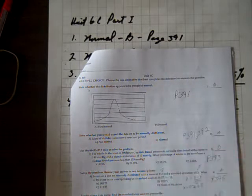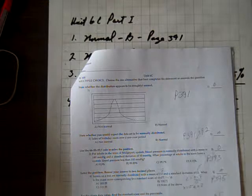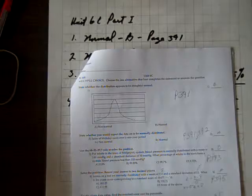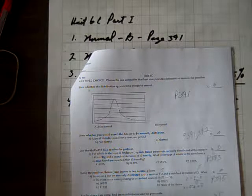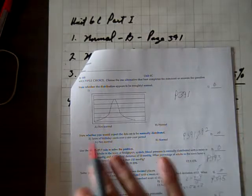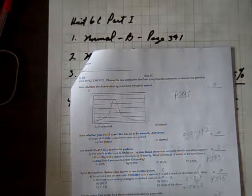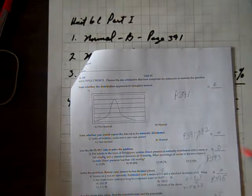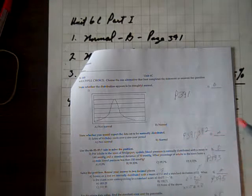For number two, we've got to state whether you would expect the data set to be normally distributed, and the sales of birthday cards over a one-year period. No, we would not expect them to be normally distributed. They'd be more uniformly distributed, almost the same number of cards sold every month. And you can see that on page 391, 392.